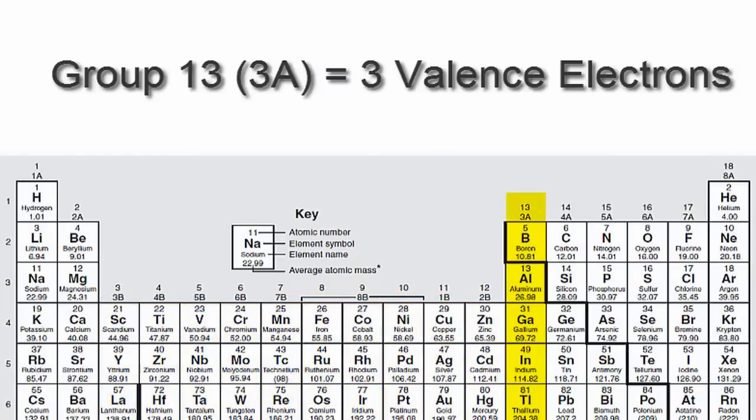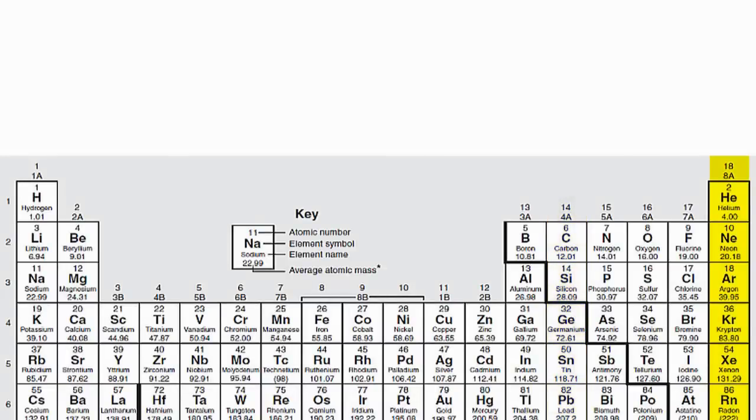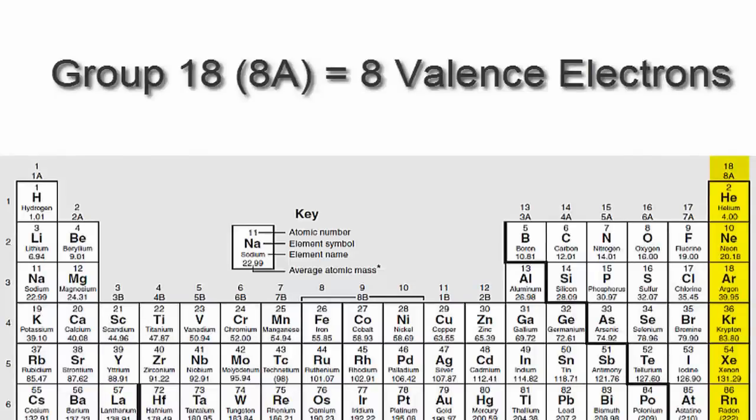We'll go to 13 or 3A, which have three valence electrons, then 14 or 4A - each of those elements in group 14 or 4A have four valence electrons, all the way up to group 18 or 8A, which have eight valence electrons.